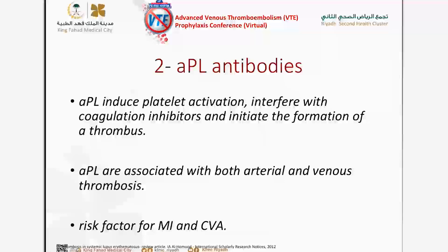Even if lupus anticoagulant or anticardiolipin antibody is negative, SLE patients still develop thrombosis — and the risk in that scenario is 10% to 18%. The presence of antiphospholipid antibodies at least doubles or triples the risk of thrombosis in SLE patients. The pathophysiology is that antiphospholipid antibodies induce platelet activation, interfere with coagulation inhibitors, and initiate thrombus formation. These antibodies are associated with both arterial and venous thrombosis.